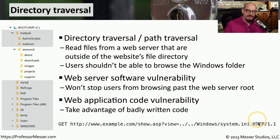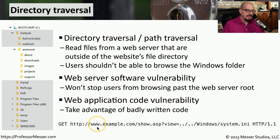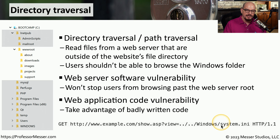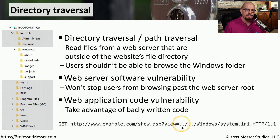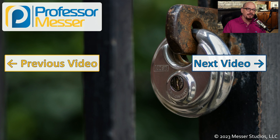Here's an example of a line in a web server log showing a user performing a GET request for a specific web page. The URL shows www.example.com/show.asp, and there are additional parameters that include dot-dot-slash dot-dot-slash windows/system.ini. The dot-dot-slash is very indicative of a directory traversal because that is the command that allows you to move backwards one directory in that particular file system. So if you see someone using dot-dot-slash when accessing files on a web server, they're probably checking to see if the server is susceptible to a directory traversal.